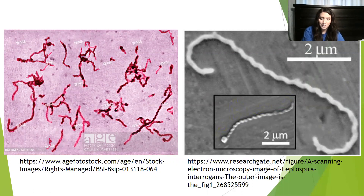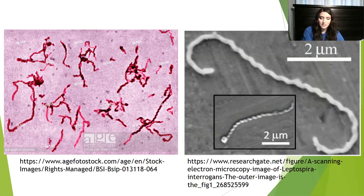Some bacteria that are close in ancestry to Leptospirointerrogens are the bacteria causing Lyme disease and the bacteria causing syphilis. Leptospirointerrogens is responsible for the disease Leptospirosis. Once it infects the host, it passes this disease as it replicates. It's deadly to rats and rodents, and has the potential to be deadly to unvaccinated dogs and, if left untreated, humans as well.